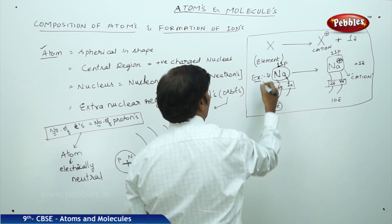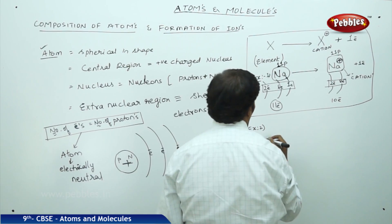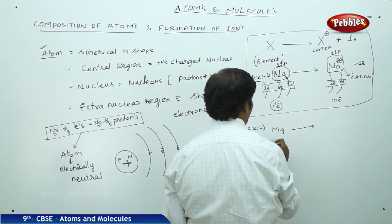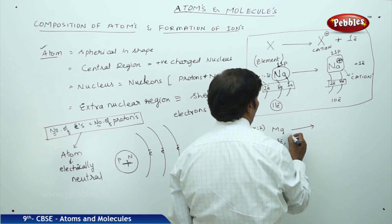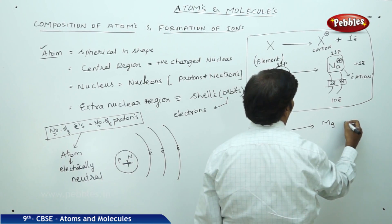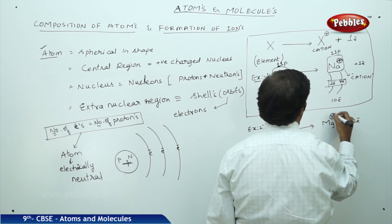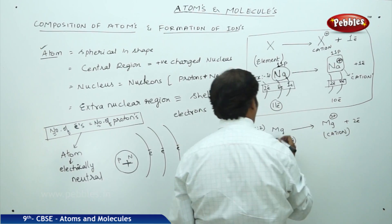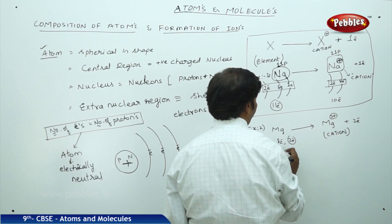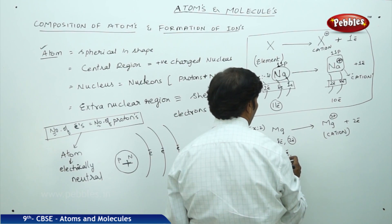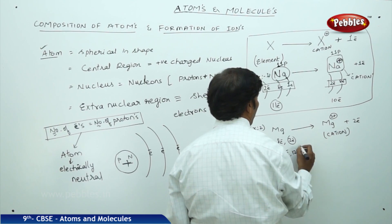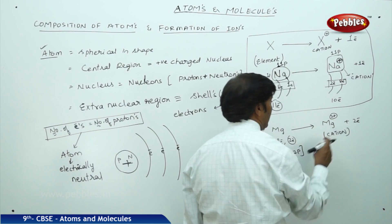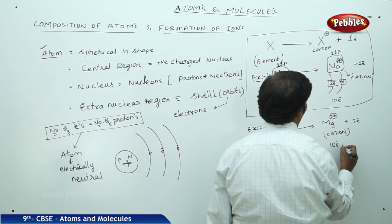As a second example, take magnesium. Magnesium loses 2 electrons because it contains 2, 8, 8, 2 electrons — and the 2 valence electrons are lost — acquiring 2 units of positive charge to form a magnesium cation. Neutral magnesium has 12 electrons and 12 protons, but the Mg2+ ion now contains only 10 electrons and 12 protons.